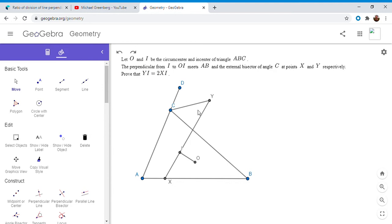So we want to show that YI is 2XI. First, I'm going to start out with something that's, whenever you see an external angle bisector, it's always perpendicular to the internal angle bisector. So CY is perpendicular to CI.